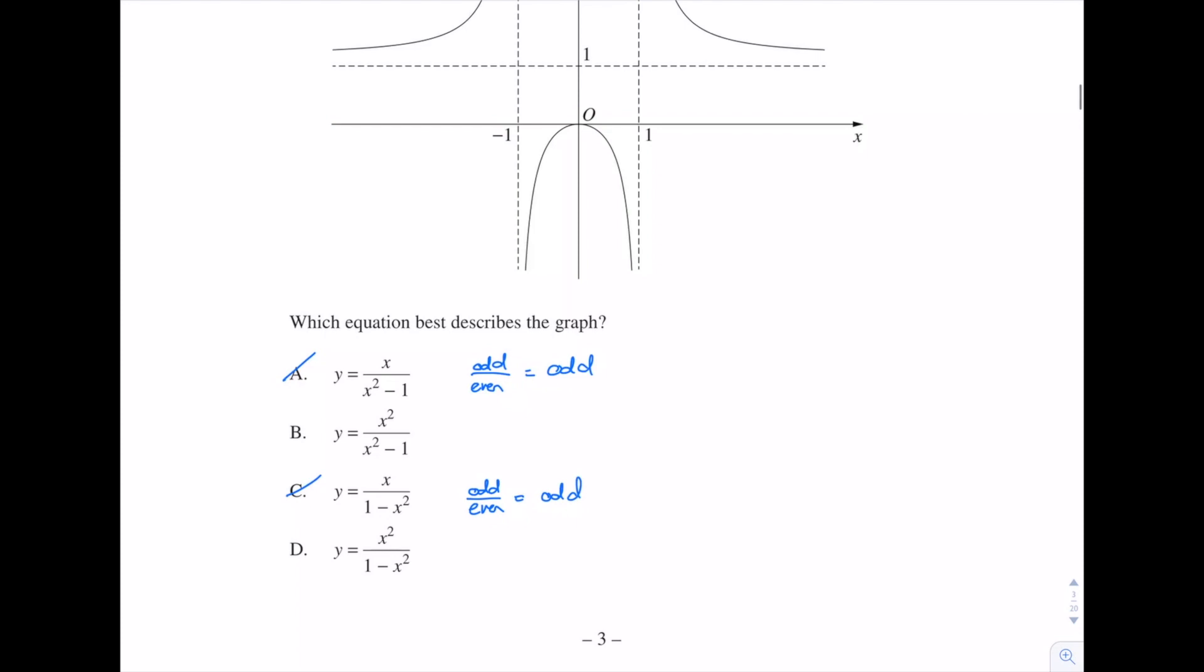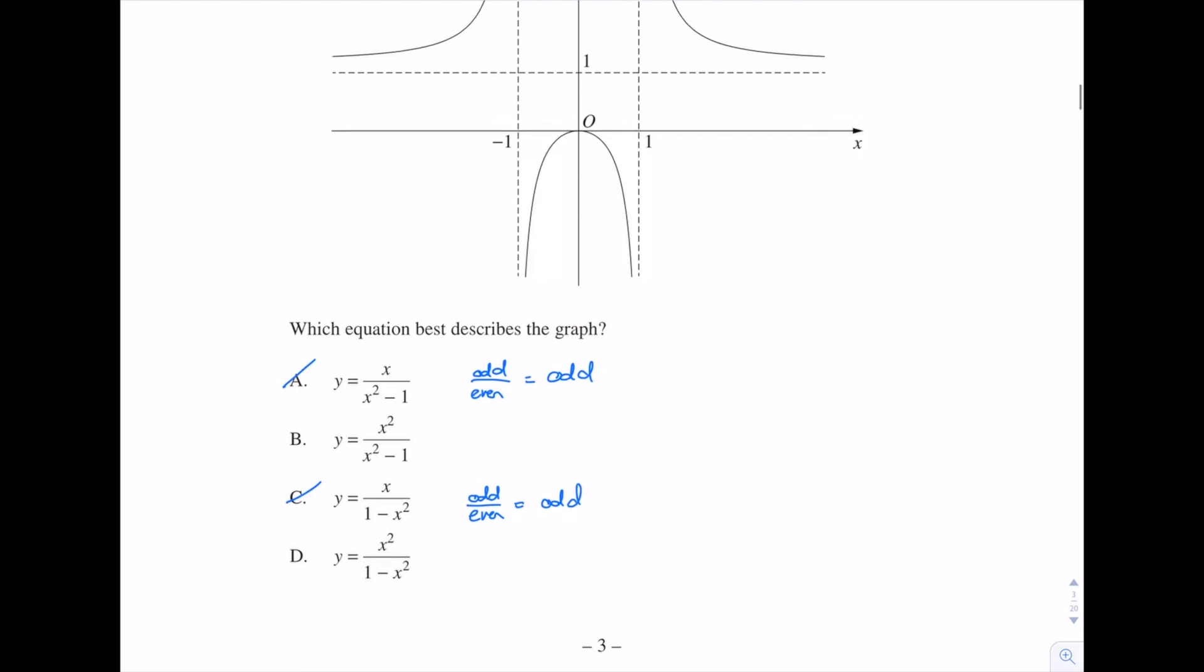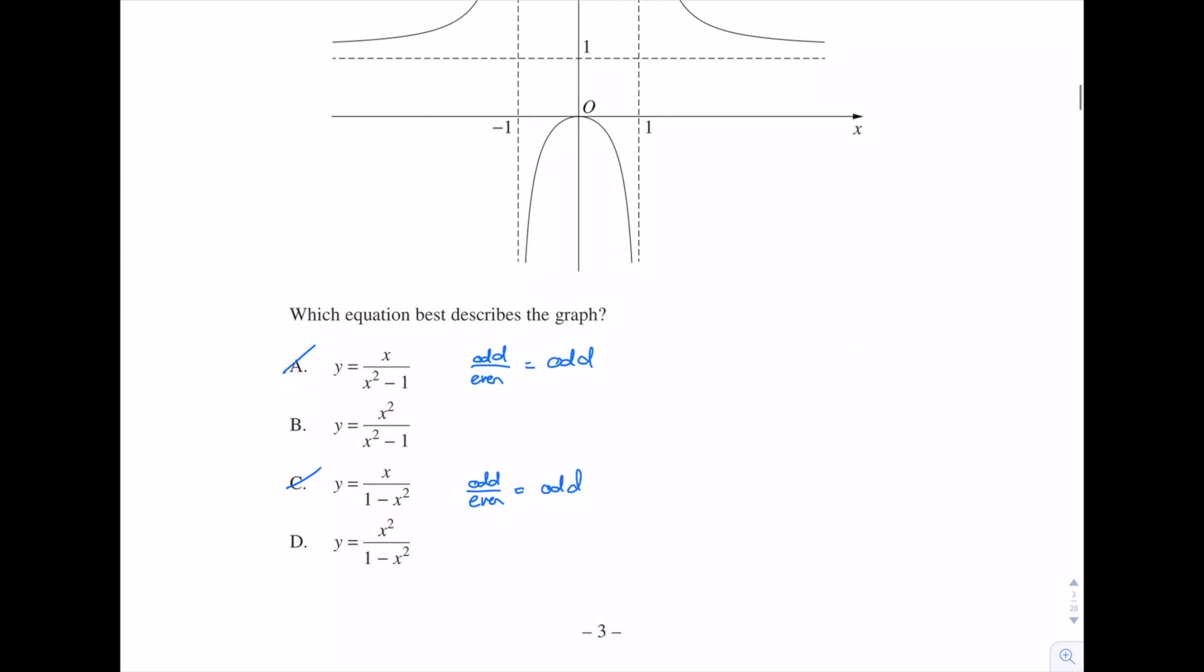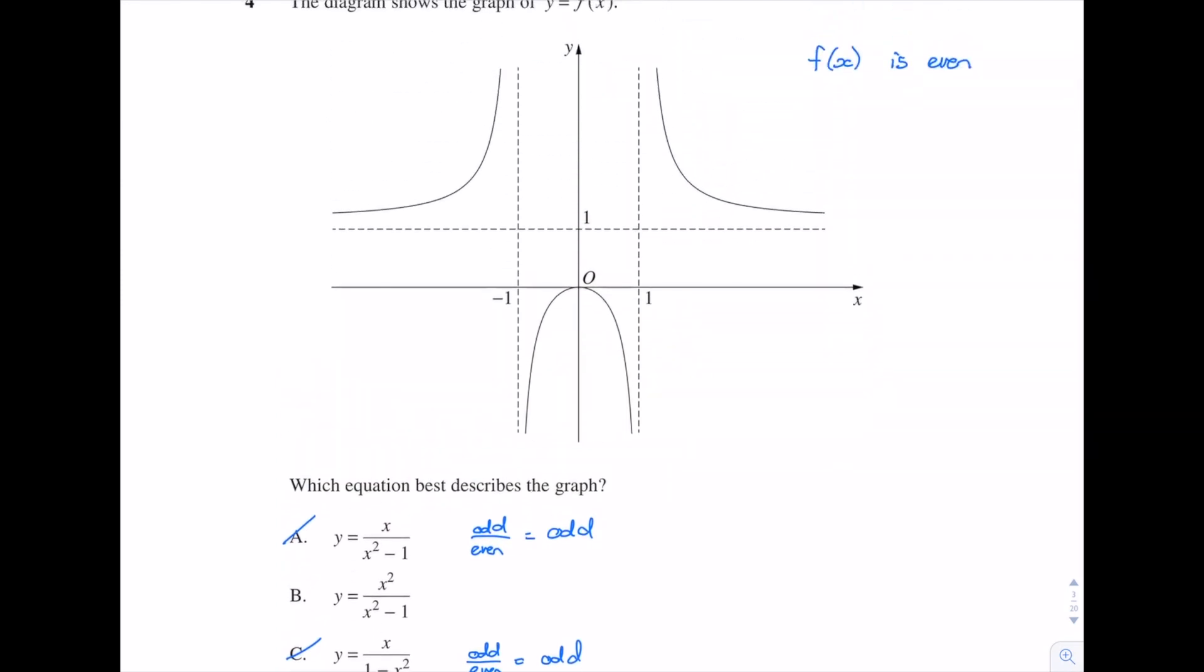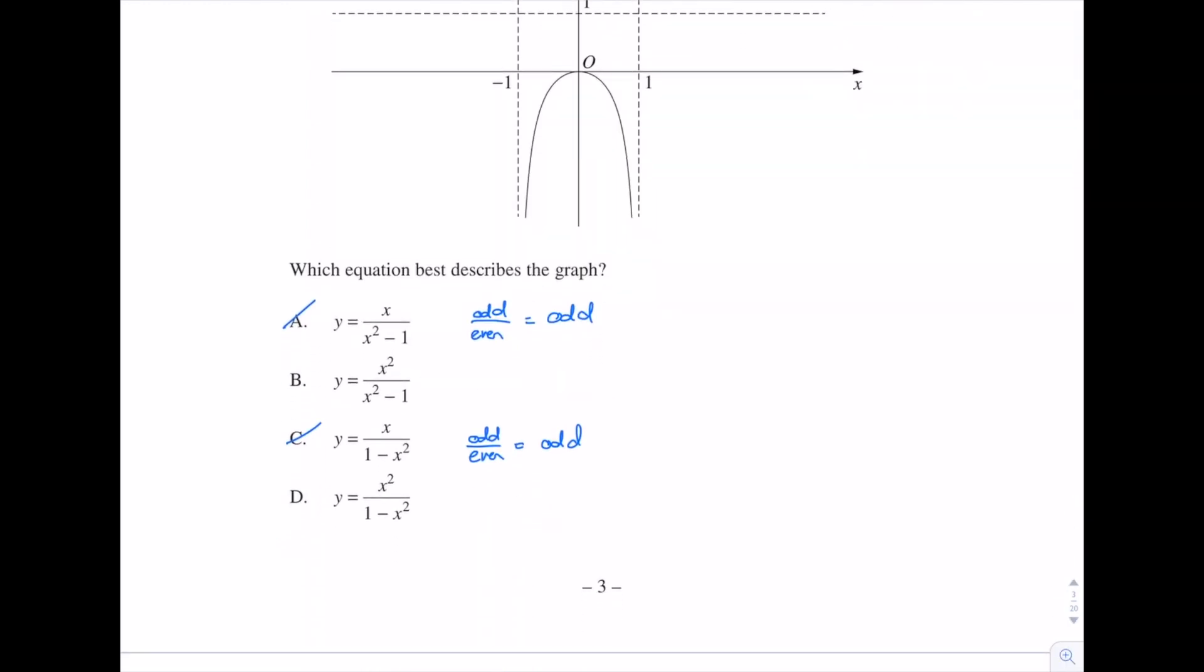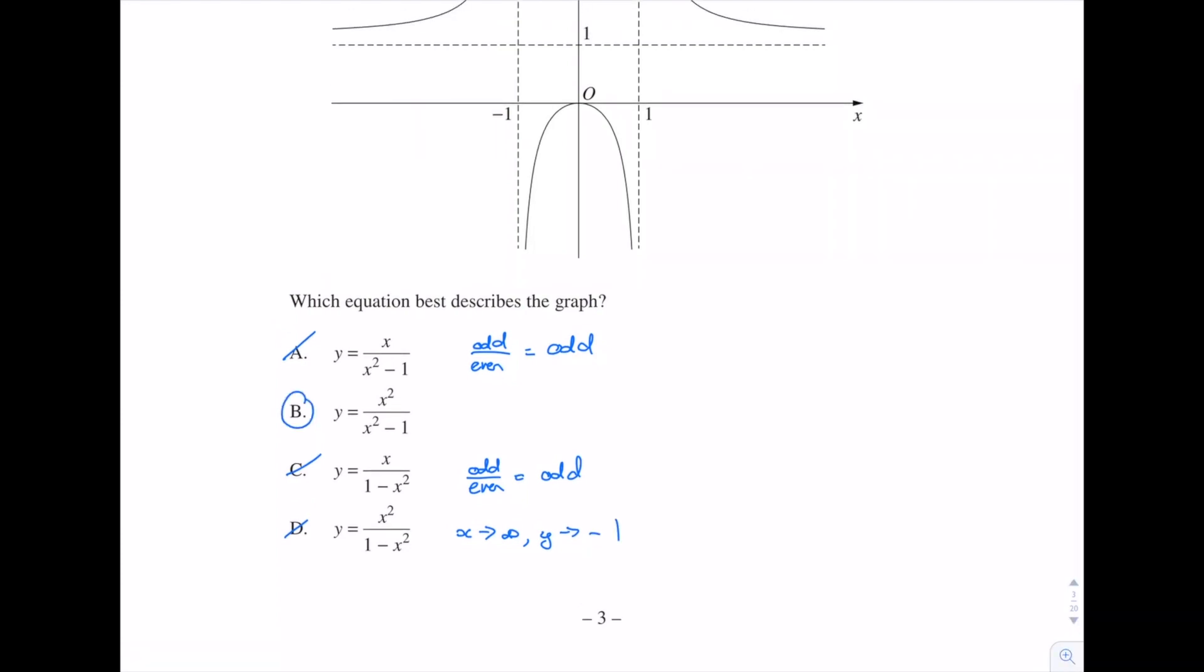The difference between B and D is just a minus sign. So if we have a look back in our function, we can see that when x gets larger and larger, so as x approaches infinity, what's happening to our function? y is approaching positive 1. And it's approaching positive 1 from above as well. So that's going to eliminate option D, because as x approaches infinity, y is going to approach negative 1. And so that leaves us with B as our correct answer.